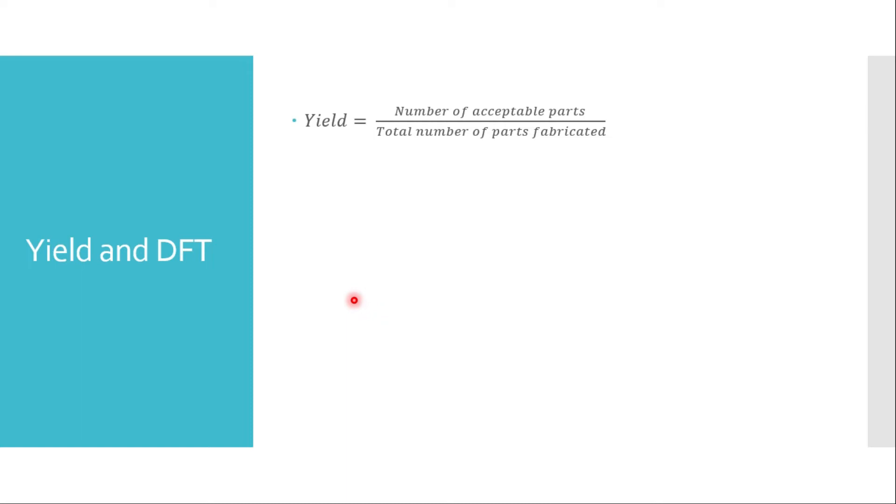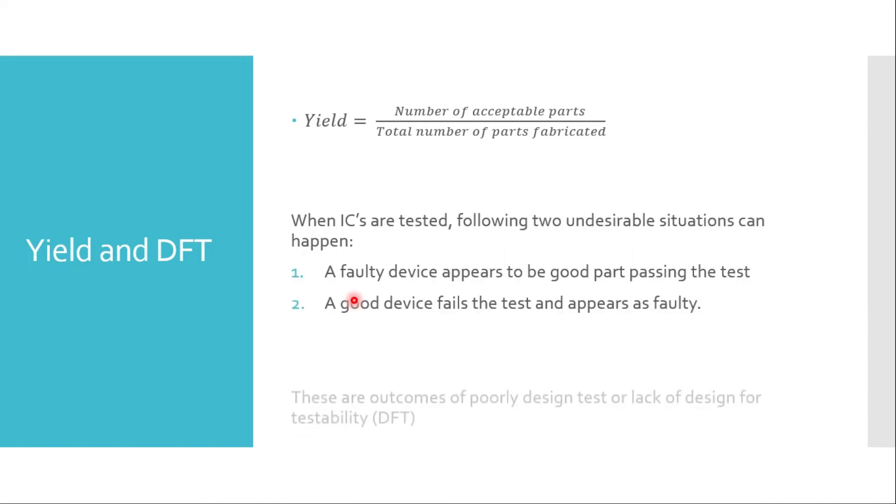Let's understand why DFT is so important. If you consider the yield equation, yield is nothing but the number of acceptable parts per the total number of parts fabricated. Now how do we decide which is an acceptable part and which is not? It's by testing, and if testing goes wrong we may end up in two situations.